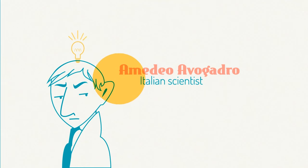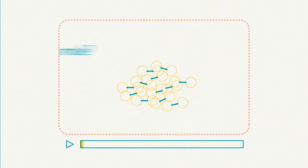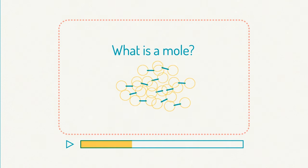Amedeo Avogadro was an Italian scientist. He gave his name to the number of particles in a mole. Maybe you don't yet know what a mole is. If so, just have a look at our video on moles before moving on with this lesson.